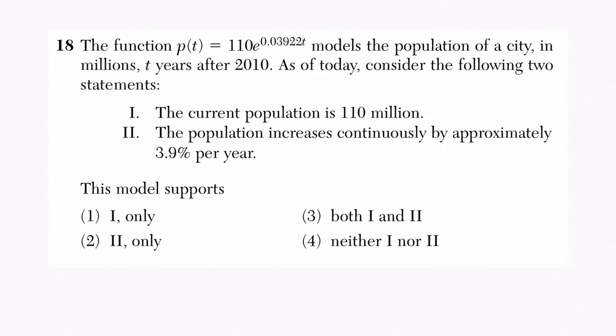Let's talk about that. Statement two is correct. It's definitely true because we have continuous growth. Whenever you see a base of E, you can assume continuous growth. E is the number we use to represent continuous growth in money or population. And I can see that we have 0.03922.